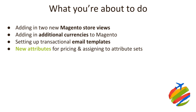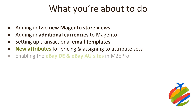Next up, we look at adding the new pricing attributes that we're going to be using for these new store views, and also how to add those to the attribute sets. This is part two of that maximum control we just spoke about. It's really straightforward — we're sure you've done this before, and it's just going to be drag-and-drop easy. But it does give you granular control over the pricing for your products on the international eBay marketplaces.